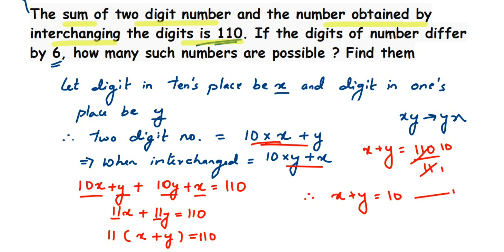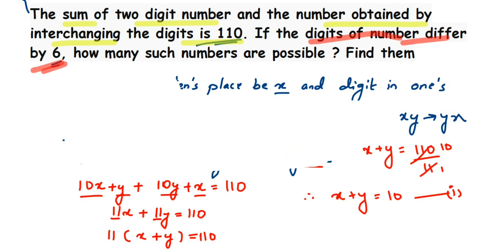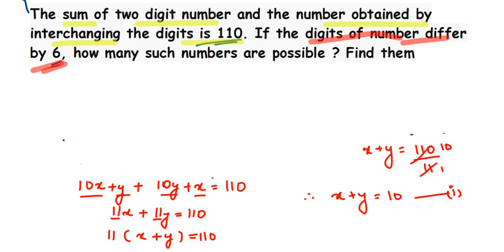Now we use the second statement given in the question. They say the digits differ by 6, so if we subtract the digit in the tens place from the ones place, the result should equal 6. So our second equation will be x − y = 6.